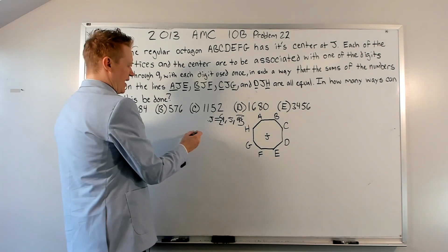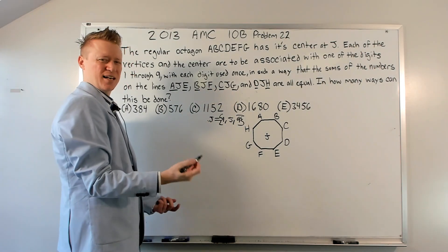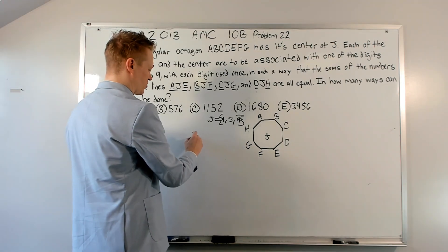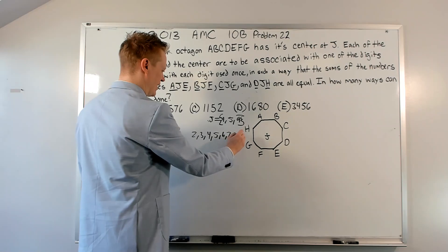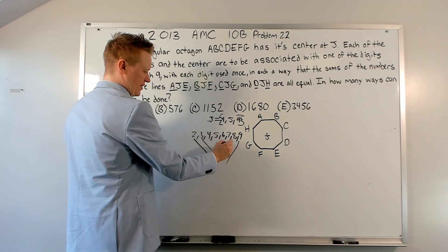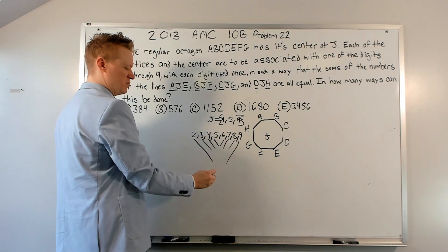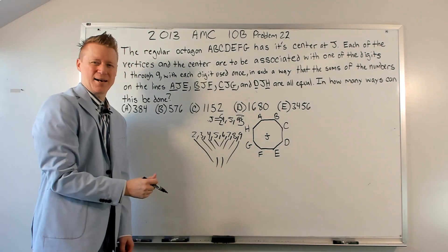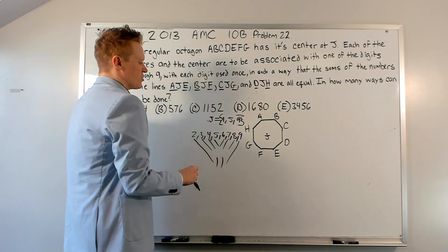Then as we said, A and E, B and F, C, G, and D and H are going to have to add up to 11. Let's just write all the other numbers: 2, 3, 4, 5, 6, 7, 8, and 9.